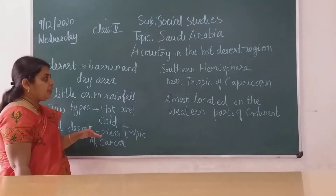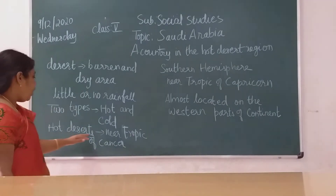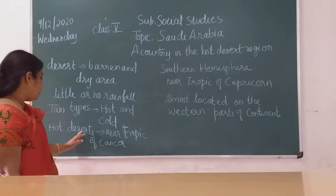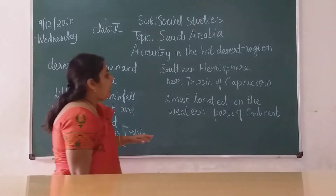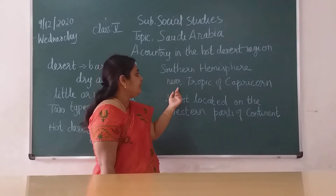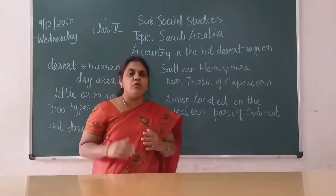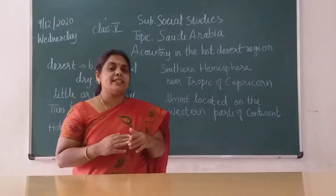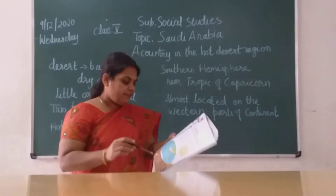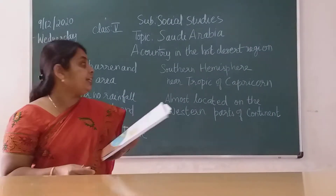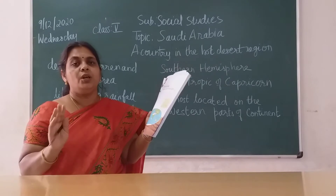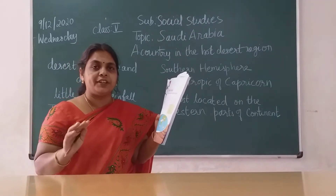The hot deserts are located near the Tropic of Cancer. In the southern hemisphere, they are near the Tropic of Capricorn. Mainly, deserts are located on the western parts of the continent. Also, Saudi Arabia is the largest country which doesn't have a river flowing through it.